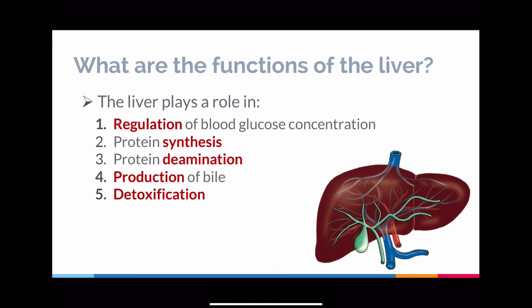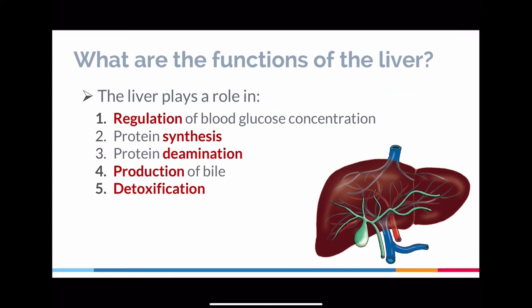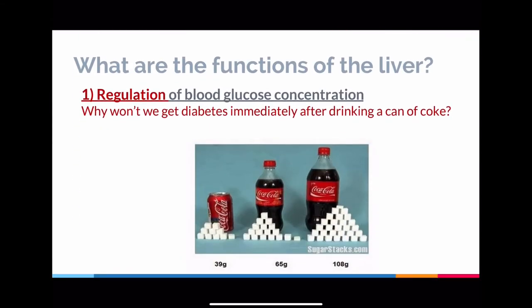The liver plays a very key role in assimilation, but it also performs other functions. The liver can help regulate blood glucose concentration — if there is too much glucose, the liver converts it into glycogen; it can also convert glycogen back to glucose when needed. The liver also does other things: making proteins, de-amination of amino acids, production of bile, and detoxification.